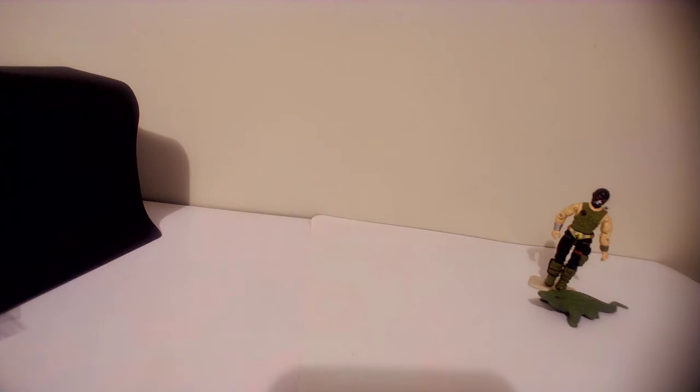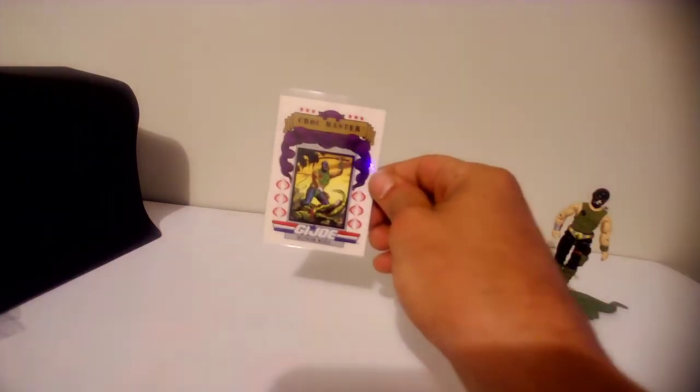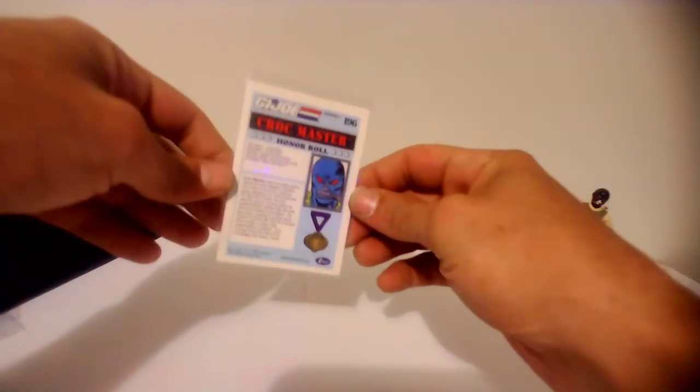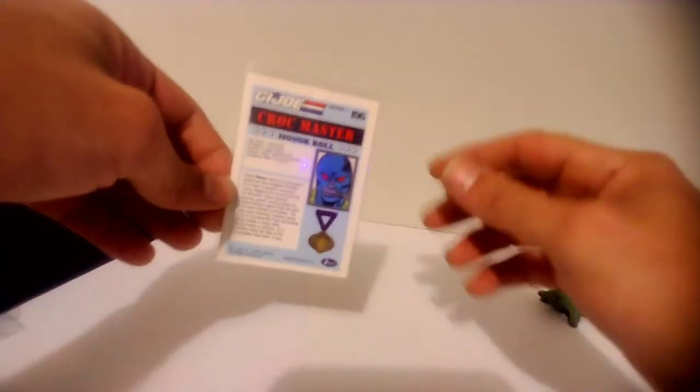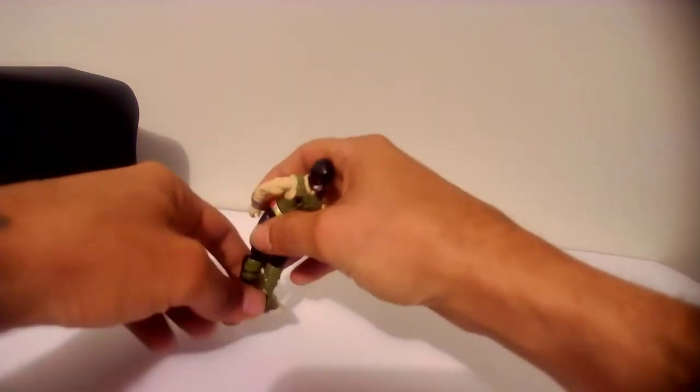Last is probably my favorite of the whole group. This is a 1987 Croc Master. With this Croc Master I'm actually going to give you a free Croc Master card with it. That'll come with Croc Master. That card is a 1991, it's in perfect shape. He will come with a stand.